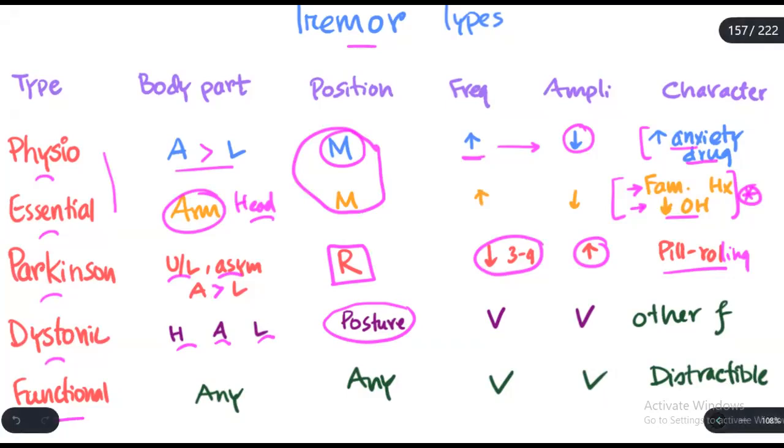In functional tremor, which is not really a tremor, which is distractible—when you distract the patient, the tremor just vanishes. In functional tremor, there can be tremor in any part of the body, in any position, and the frequency and amplitude are not fixed. They can go up and down.